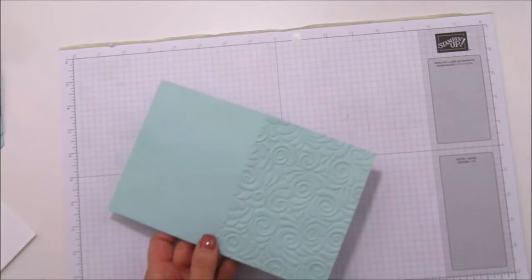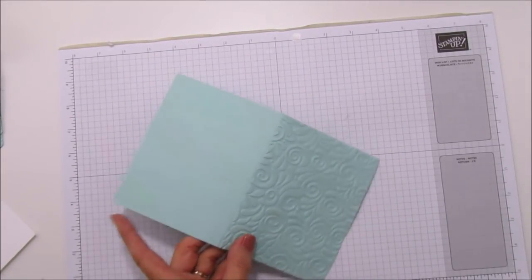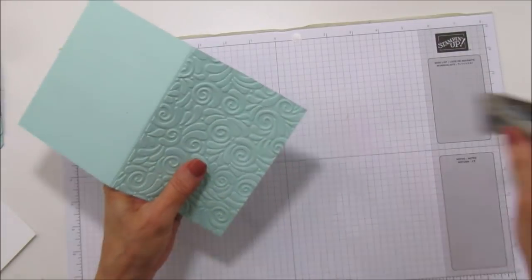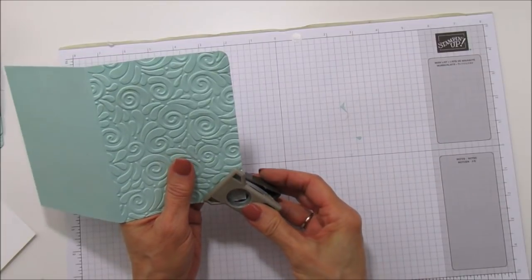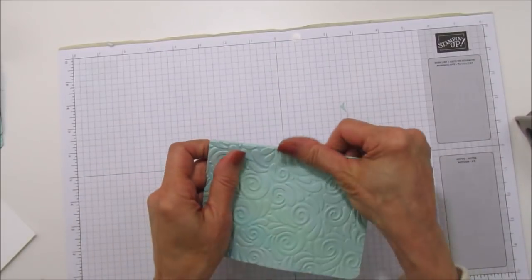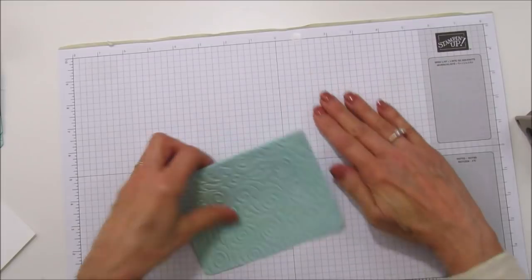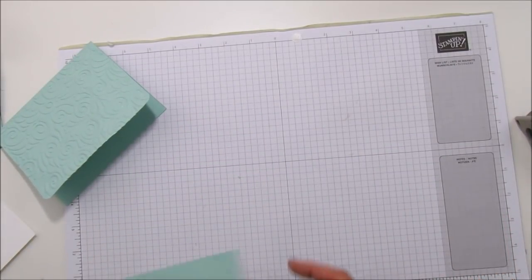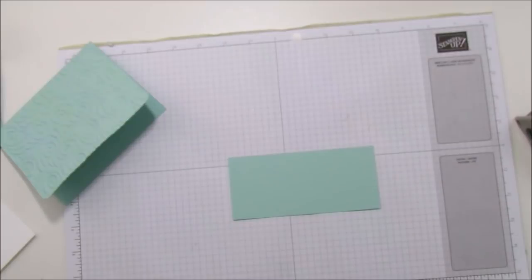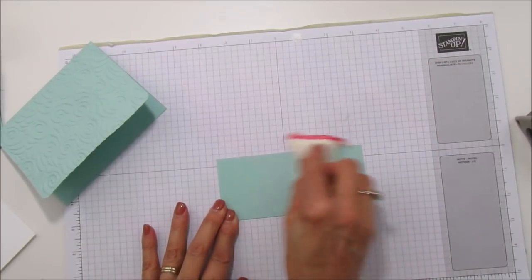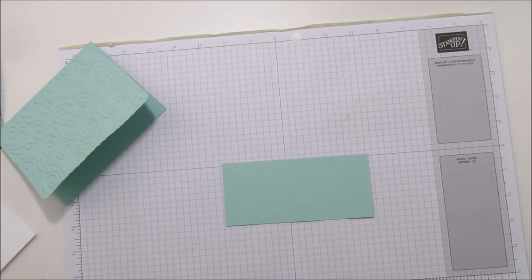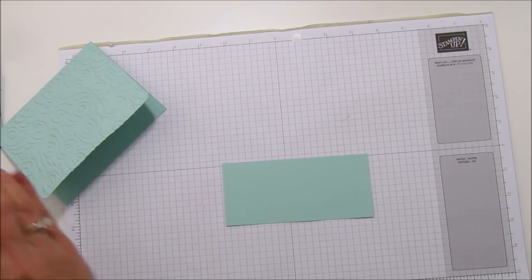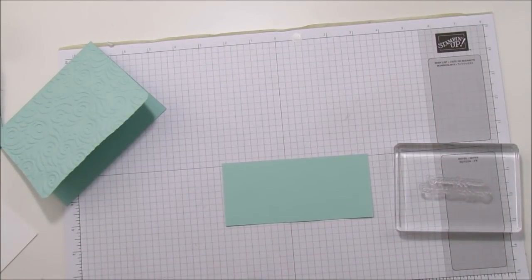All right we got that done and I'm using you can use whatever corner rounder you have. I'm using this one because it's always right here on my desk. We're going to round the corners just to make it a little bit more elegant looking and then for this piece I'm going to grab my embossing buddy and we are going to use that to keep the static down. I'm going to grab my sentiment here.